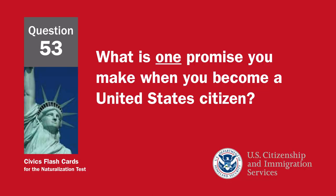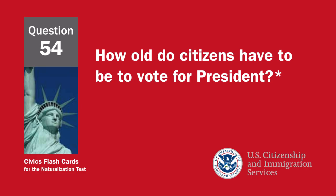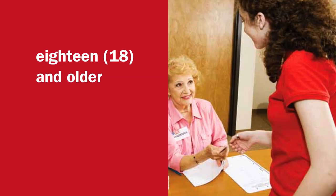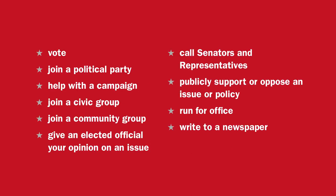What is one promise you make when you become a United States citizen? Give up loyalty to other countries; defend the Constitution and laws of the United States; obey the laws of the United States; serve in the U.S. military if needed; serve or do important work for the nation if needed; or be loyal to the United States. How old do citizens have to be to vote for president? Eighteen and older. What are two ways that Americans can participate in their democracy? Vote, join a political party, help with a campaign, join a civic group, join a community group, give an elected official your opinion, call senators and representatives, publicly support or oppose an issue or policy, run for office, or write to a newspaper.